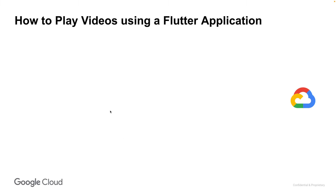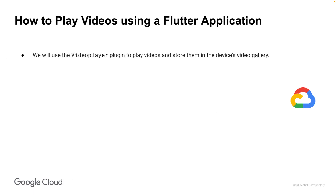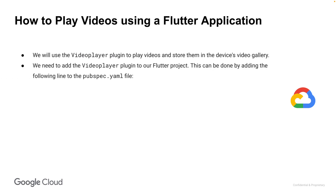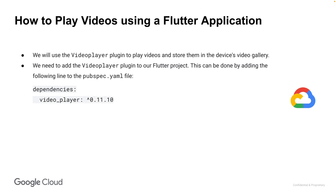In this video we will discuss how to play videos using a Flutter application. We will use the video player plugin to play videos and store them in the device's video gallery. To get started we need to add the video player plugin to our Flutter project. This can be done by adding the following line to the pubspec.yaml file — we need to add the video player dependency to that file.